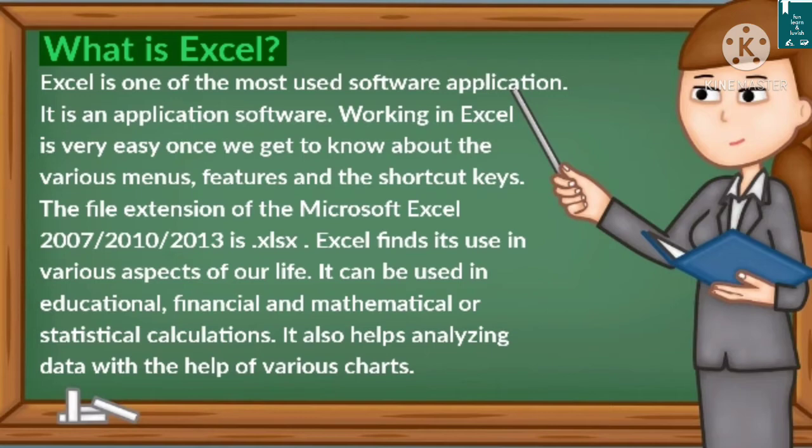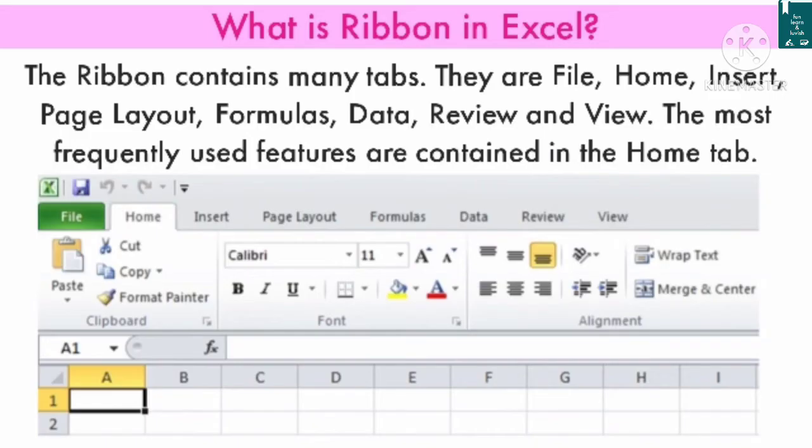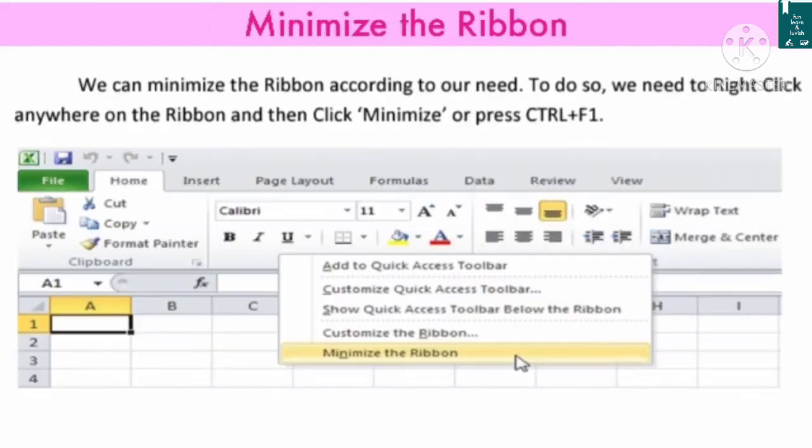What is the ribbon in Excel? The ribbon contains many tabs. They are: File, Home, Insert, Page Layout, Formula, Data, Review, and View. The most frequently used features are contained in the Home tab.